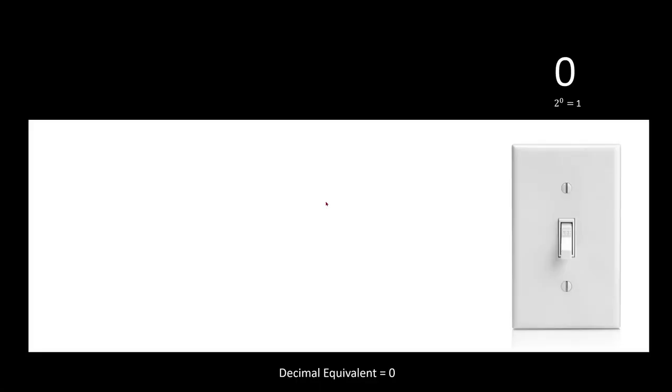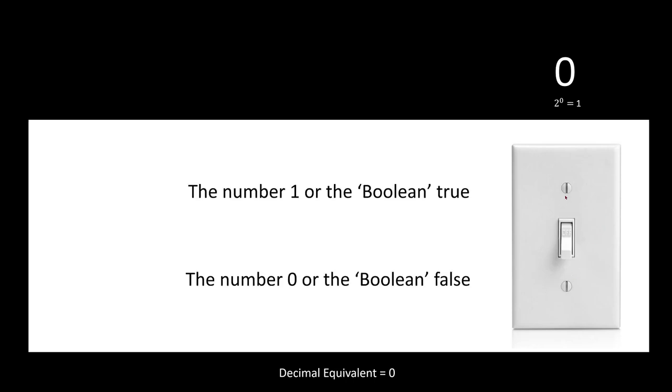Computers do not use base 10 arithmetic. They use base 2 arithmetic. In other words, each column can count from 0 to 1, two states. 2 raised to the 0 is 1. I'm using a light switch here to represent the value, so it can either be 0 or 1 if it's raised. We also use a single bit to represent the boolean true or false.